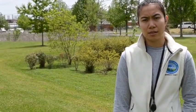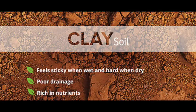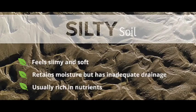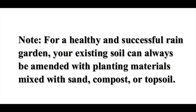Next, you'll determine the soil type, the size of your rain garden, and the depth of the rain garden. Take a sample of your soil to determine if it is clay, silt, or sand based on texture. This will be especially useful when determining the native plants that you will use in your garden.